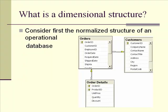We have related to our order a customer, and that relationship takes place using the customer ID number or code. We don't repeat the customer's name or the customer's address on each row in the orders table. We simply refer to that information — the name, et cetera — about the customer using the customer ID. So our operational database, our normalized structure, reduces any replication of data, which is very good if you're entering data, because if we have to change it, we don't want to change it in more than one place.